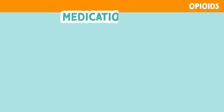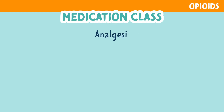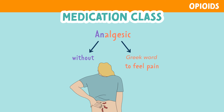Opioids are analgesics. The suffix 'an' means without, and the Greek word 'algesia' means to feel pain. So analgesic medications help to relieve pain.